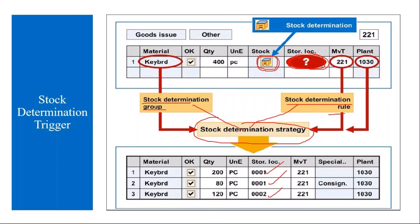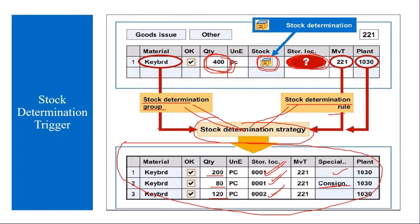For example, if the quantity is 400, the system will propose the storage locations and split the quantities across them based on your settings. It also proposes the stock type — a blank stock type means unrestricted use, and consignment stock may also be proposed. To have all of this work, you need stock determination settings configured in the system.